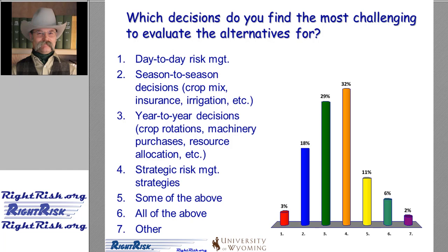Almost another third reported that they find year-to-year decisions more difficult. This choice involves choosing crop rotations, machinery purchases, and general resource allocation. The remaining third of managers suggested that season-to-season decisions are the most challenging, among those who indicated more than one choice. It is interesting that active managers of large Midwestern farms find bigger-picture-type decisions the most challenging.